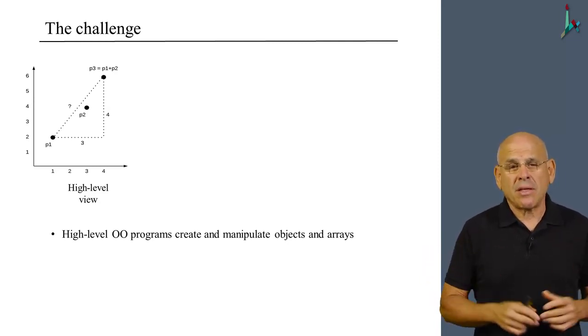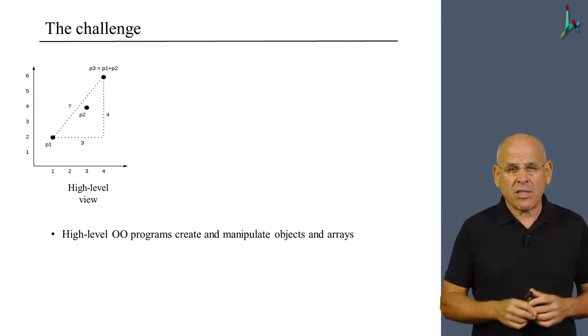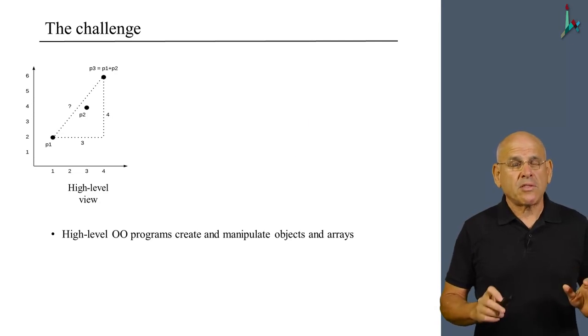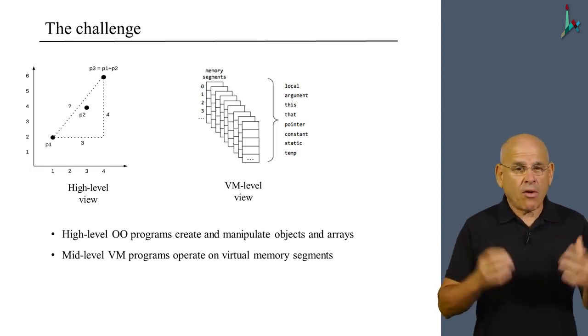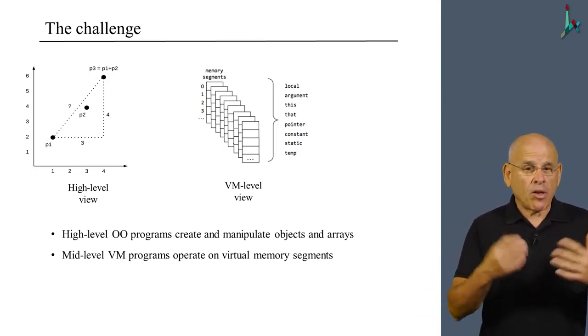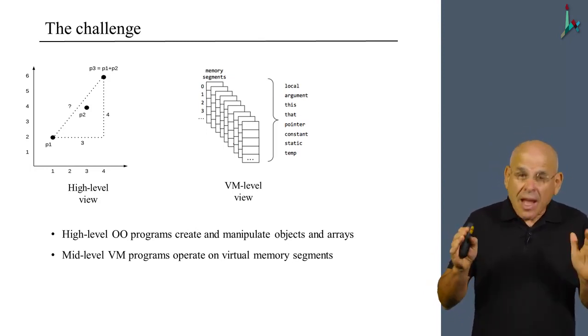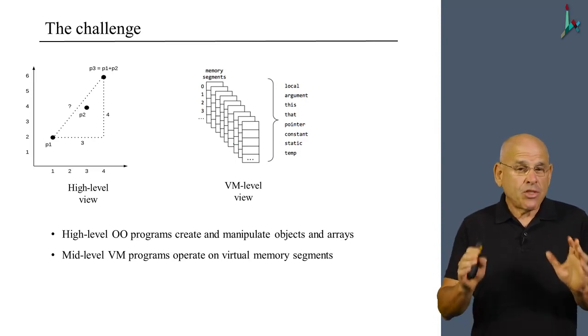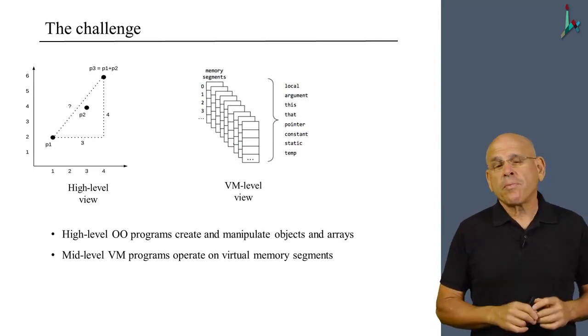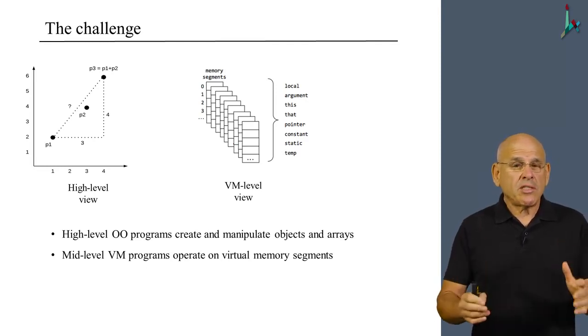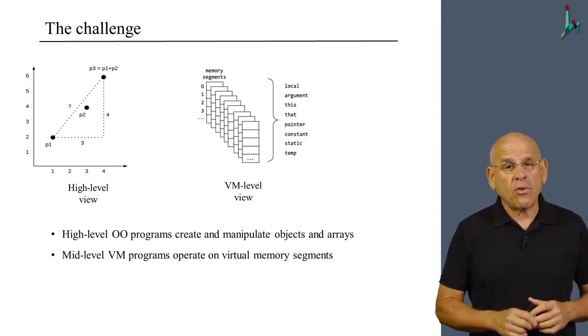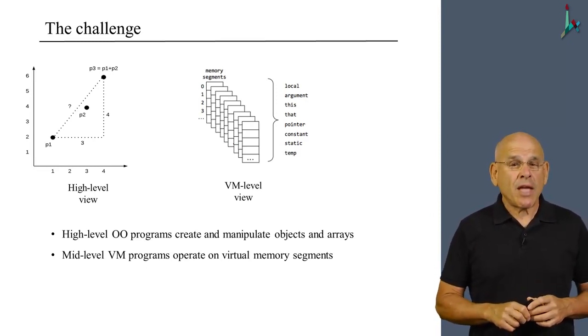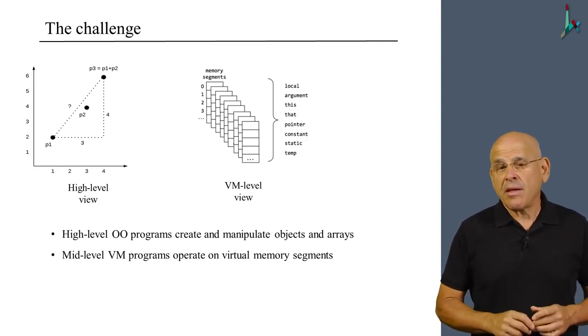However, if you were forced to write the same code using the intermediate VM language, you wouldn't have all this luxury of objects and methods that operate on objects. Instead, you would be stuck with the much simplified world view of the virtual machine, which consists of eight virtual memory segments. Everything that you did in the high level you had to do using these virtual memory segments and push and pop and other VM commands.